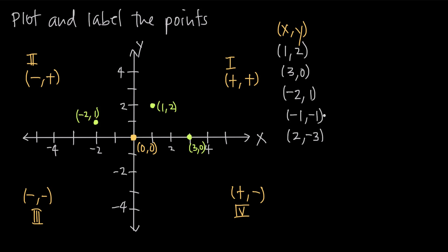Now (-1, -1). If we look at the signs for each quadrant, we can see that (-1, -1) should be in the third quadrant because both x and y are negative. Starting at the origin, we go to negative 1 along the x-axis, then down 1 in the negative direction of the y-axis. That gives us the point (-1, -1), and in fact it is in the third quadrant, just as we expected.